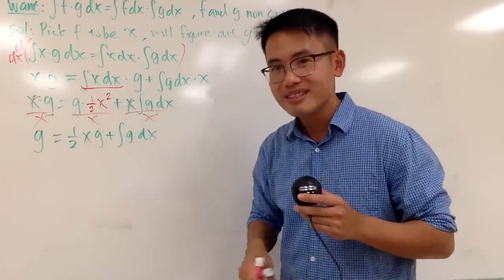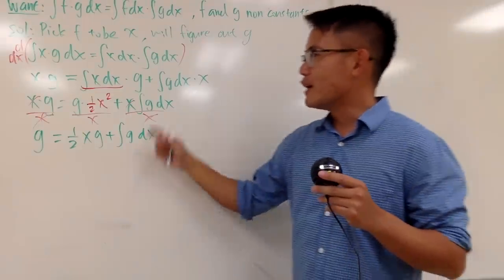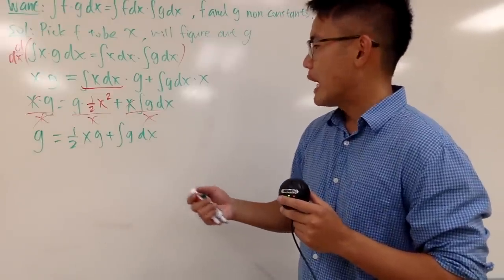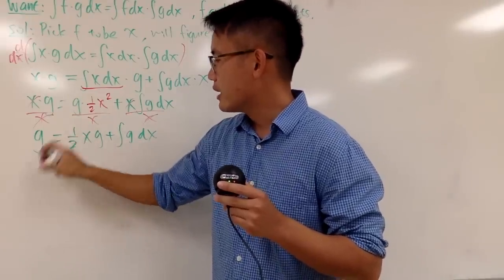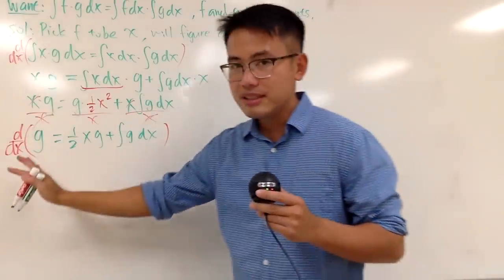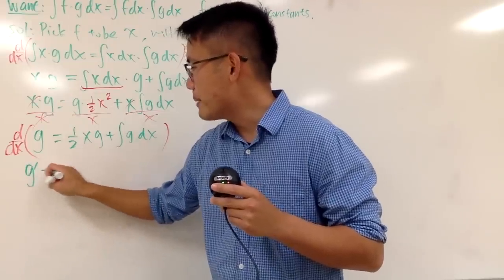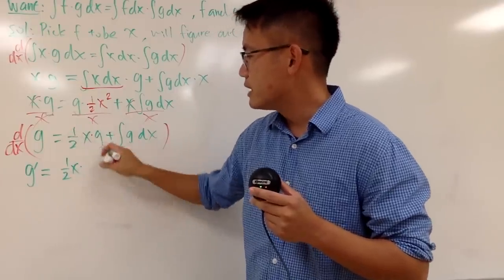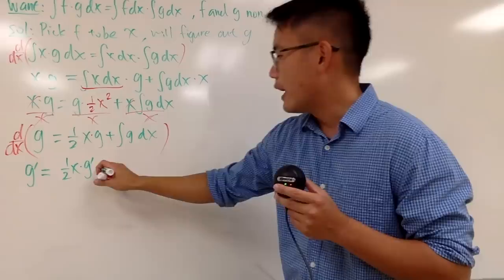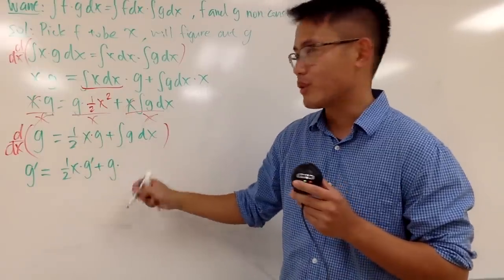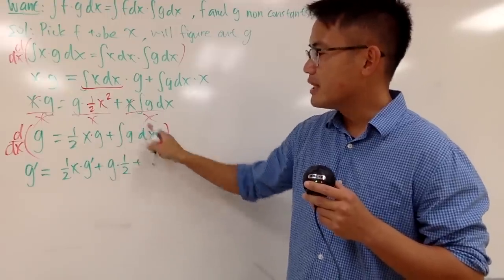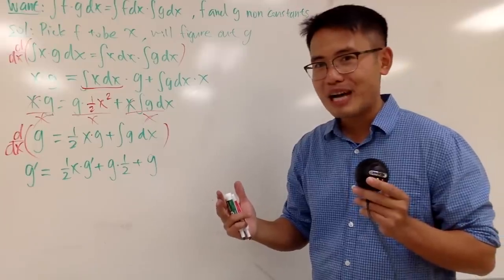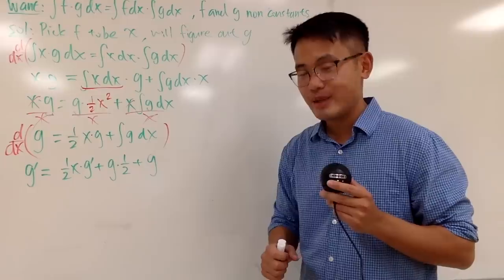Instead of three integrals, now we just have one. We still have to get rid of this integral, so we differentiate again. On the left-hand side, we get g prime. On the right-hand side, we use the product rule again: keep the first function one-half x, times the derivative of the second, which is g prime; then add the second function, the integral of g dx, times the derivative of one-half x, which is just one-half. And then we add the derivative of g, which is just g. So we end up with a differential equation.